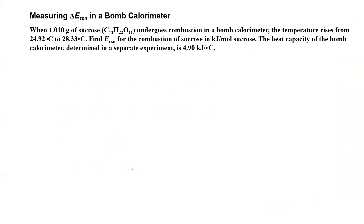Here's a classic bomb calorimeter problem asking you to measure the change in energy of a reaction. The problem reads: when 1.010 grams of sucrose undergoes combustion in a bomb calorimeter, the temperature rises from 24.92 degrees Celsius to 28.33 degrees Celsius. Find the energy of the reaction for the combustion of sucrose in units of kilojoules per mole of sucrose.